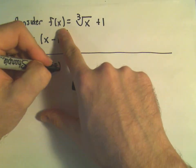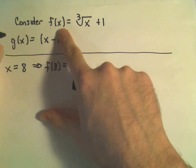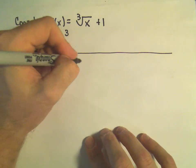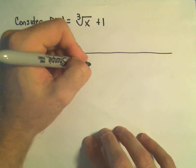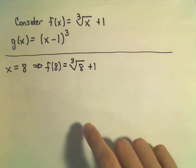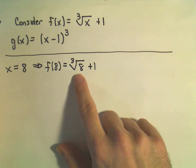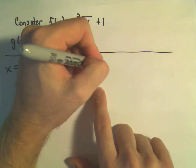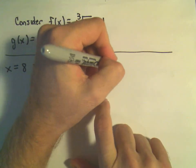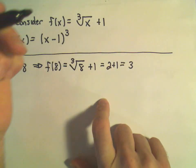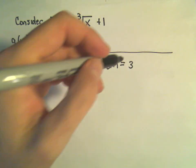We would get f of 8, which would be the cube root of 8 plus 1. Well, the cube root of 8 is 2. So we'll have 2 plus 1, which is 3.